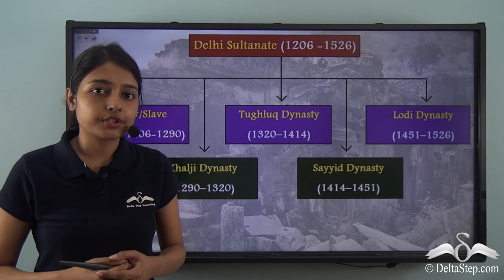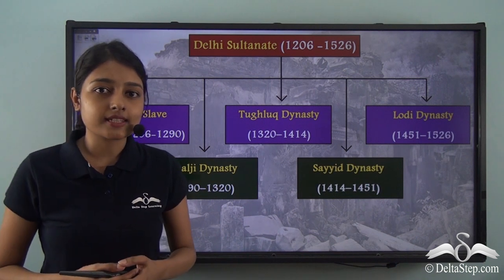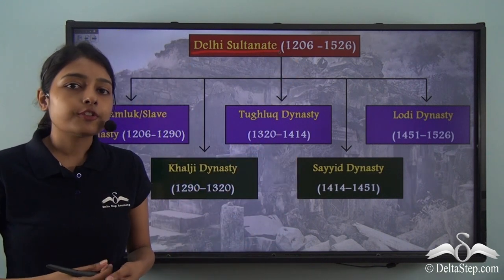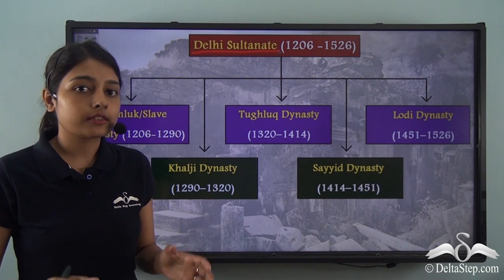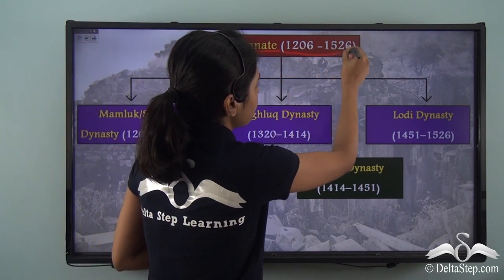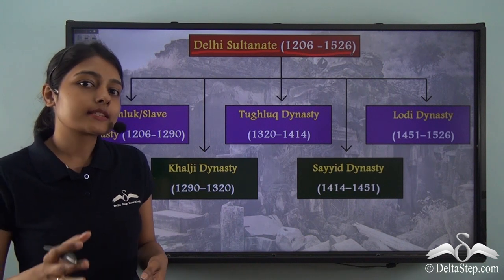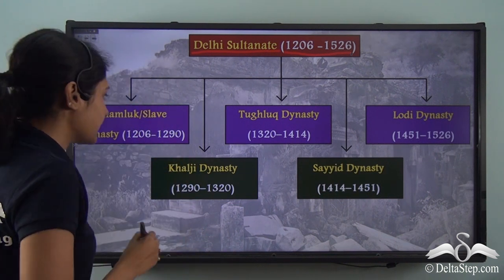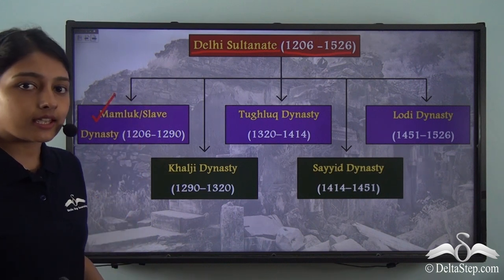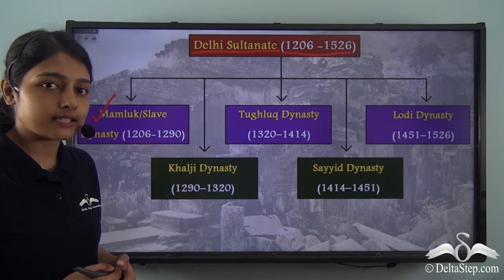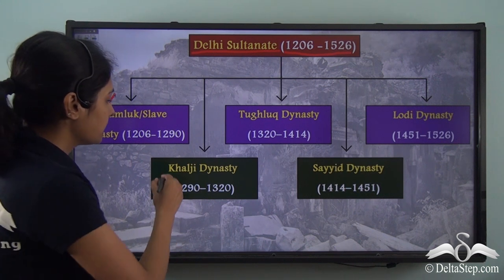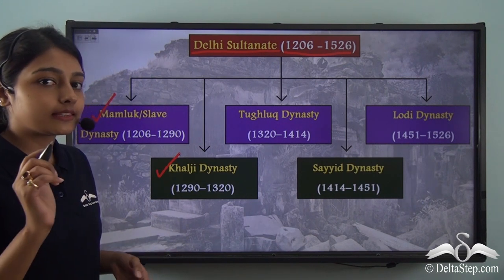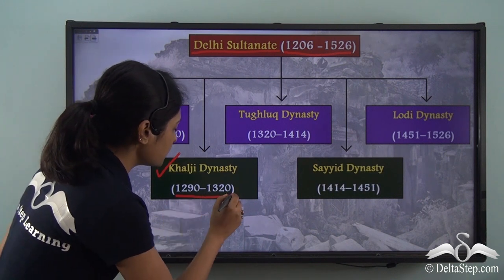The last lesson introduced us to the five great dynasties that together comprise the Delhi Sultanate, which together ruled from 1206 to 1526. The first dynasty was the Mamluk or slave dynasty that ruled from 1206 to 1290. The Khalji dynasty, also called the Khilji dynasty, came immediately after and ruled from 1290 to 1320.